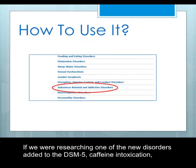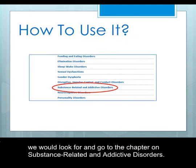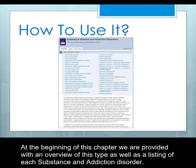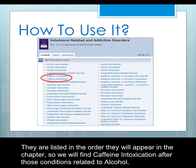If we were researching one of the new disorders added to the DSM V — caffeine intoxication — we would look for and go to the chapter on substance-related and addictive disorders. At the beginning of this chapter, we are provided with an overview of this type as well as a listing of each substance and addiction disorder. They are listed in the order they will appear in the chapter, so we will find caffeine intoxication after those conditions related to alcohol.